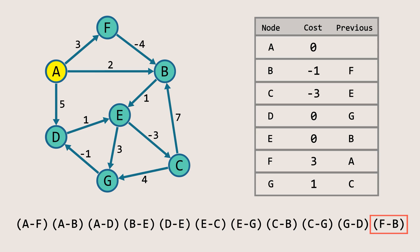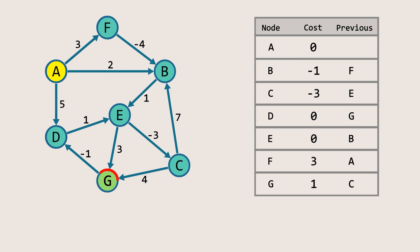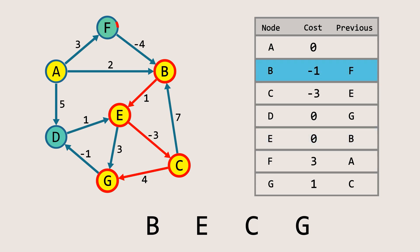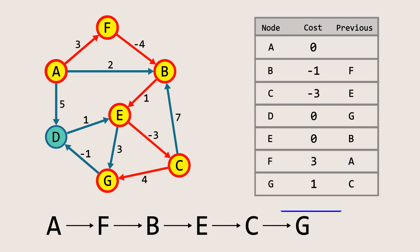We can stop here and return the results. Let's use the result to find the shortest path from node A to node G. First, we check the previous node of node G, which is node C. So we add node C to the path and then check its previous node, which is node E. We add node E to the path and look at its previous node, which is node B. Next, we add node B to the path and check its previous node, which is node F. We add node F to the path and then check its previous node, which is node A, the source node. Since we've reached the source, we stop here. Now we have the shortest path from node A to node G.